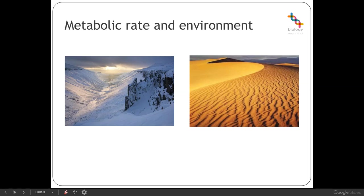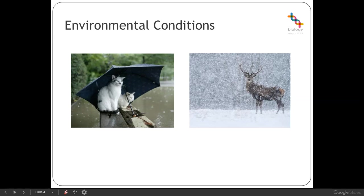The environment that an organism exists in can change very quickly — rain, wind, sunlight, cloud cover, etc. will all influence the environmental conditions. Additionally, we can have more seasonal changes depending on the climate the organism is living in, and also potentially longer timescales. Continental drift has influenced the environments different organisms live in, and we're currently undergoing significant climate change impacts, all creating different environmental conditions that organisms need to be able to adjust to.